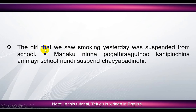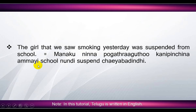'The girl that we saw smoking yesterday was suspended from school' means 'manaku ninna togatraaagutu kadmijina ammai, school nundi, suspend cheya badindhi'. Here, 'girl' means 'ammai', 'girl that we saw smoking yesterday' means 'ninna pogatraaagutu kadmijina ammai'. 'Was suspended' means 'suspend cheya badindhi', 'from school' means 'school nundi'. 'From' means 'nundi', 'yesterday' means 'ninna'.